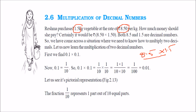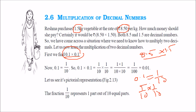Let us take a simple example: 0.1 into 0.1. 0.1 means 1 by 10. So this becomes 1 by 10 into 1 by 10. We know that numerator times numerator, denominator times denominator — this multiplication gives 1 by 100.